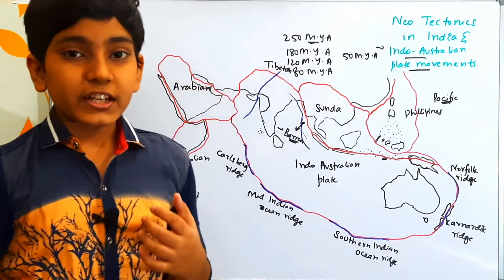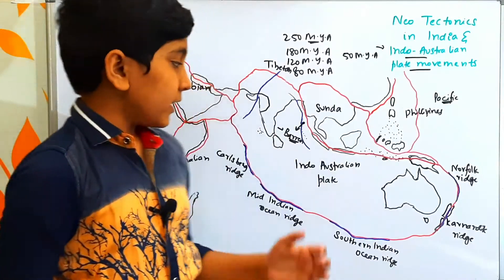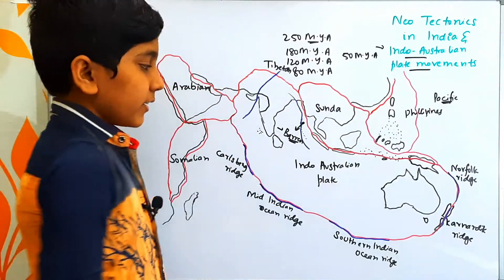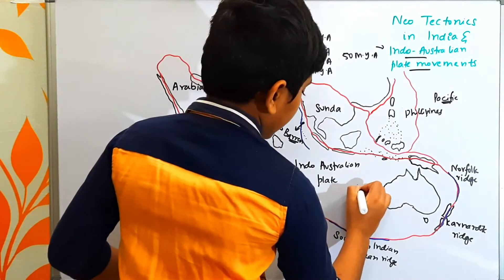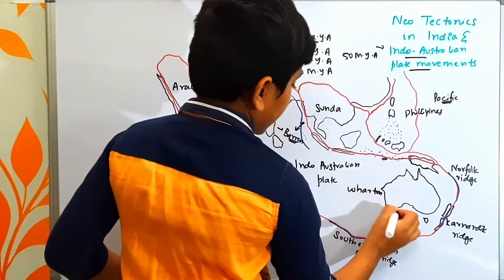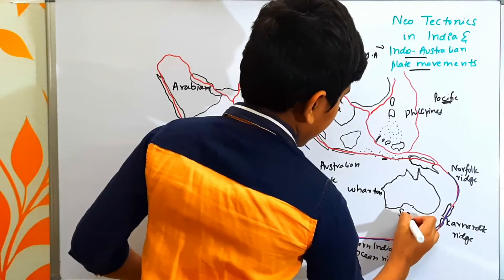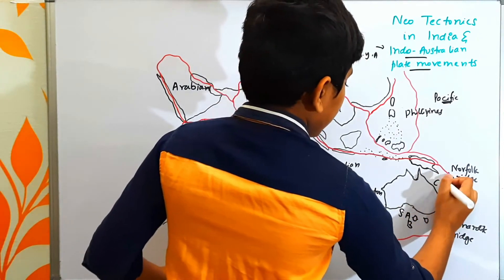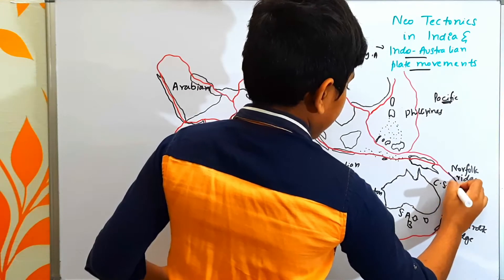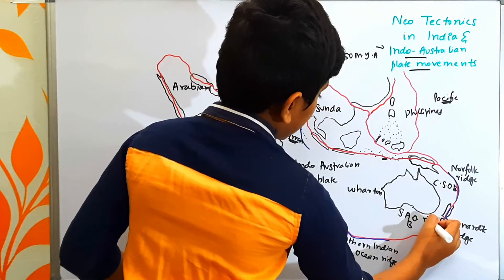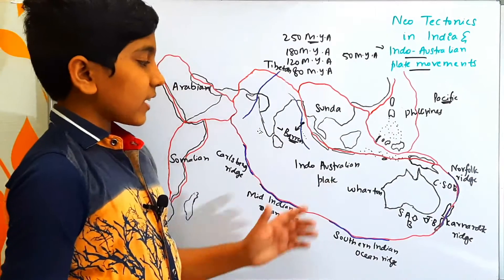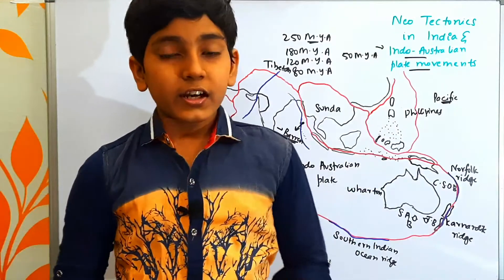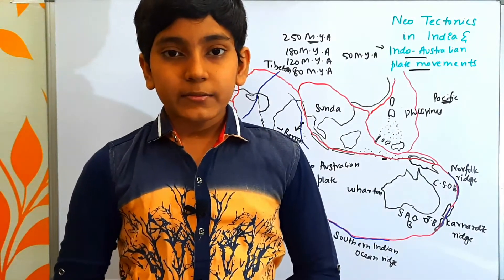Now let us see the ocean basins formed at the Indo-Australian plate margins. Firstly, in this region, we have the Wharton Ocean Basin. Here we have the South Australian Ocean Basin. In this region, we have the Coral Sea Ocean Basin. And this is called the Tasman Basin. These are some ocean basins near the regions of Australia in the Indo-Australian plate margins.